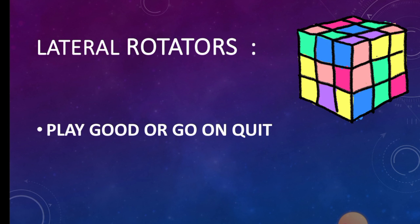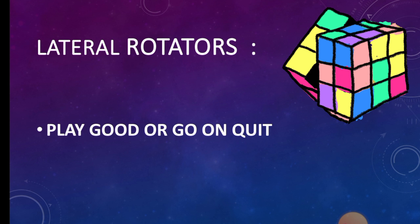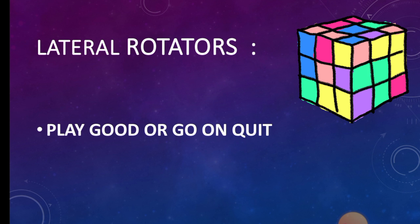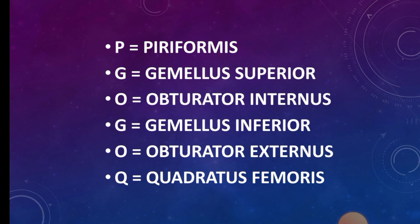Now lateral rotators. The mnemonic for lateral rotators is 'play good or go and quit.' P for piriformis, G for gemellus superior, O for obturator internus, Q for quadratus femoris, G for gemellus inferior, O for obturator externus.